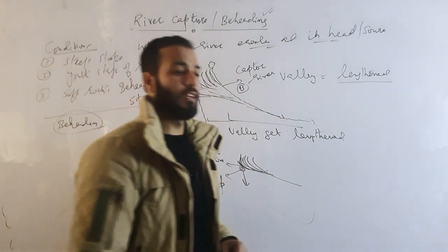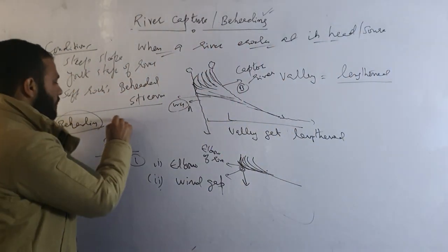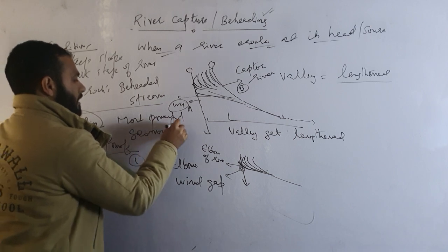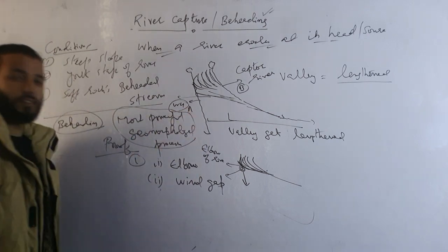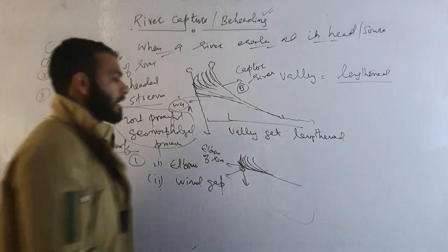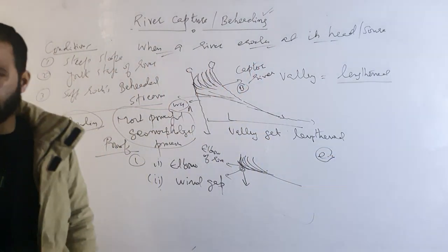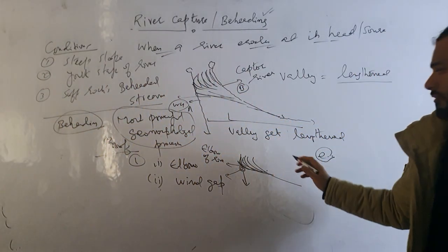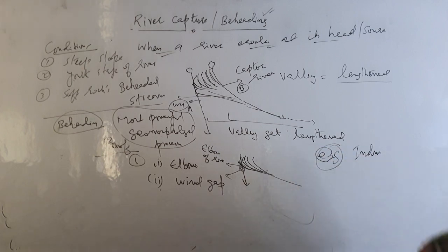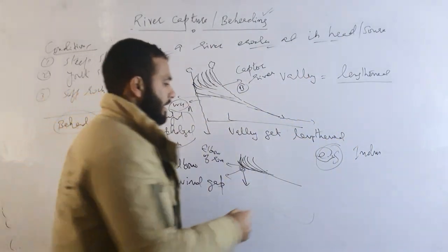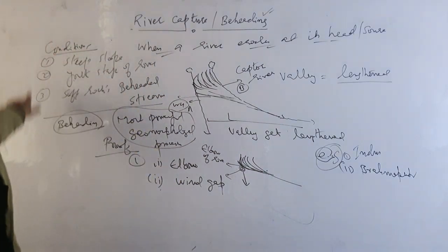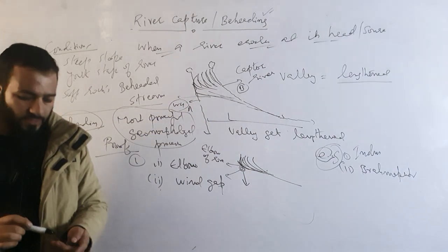River beheading is one of the most important and powerful geomorphological processes. For examples, you can write that the Brahmaputra river has captured many rivers at its source. So these are the examples, the ideal conditions, and the concept of river capture which we have understood today.